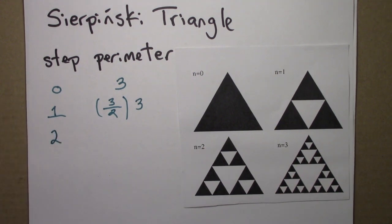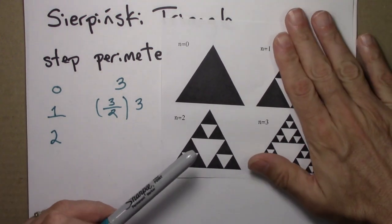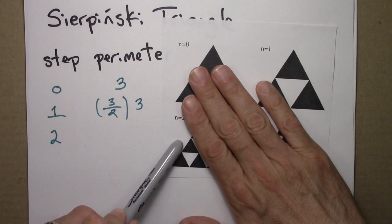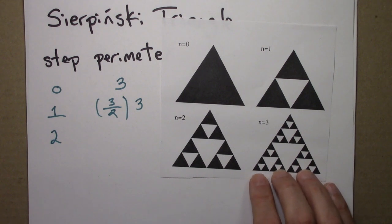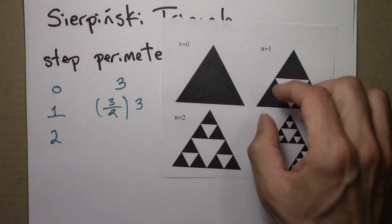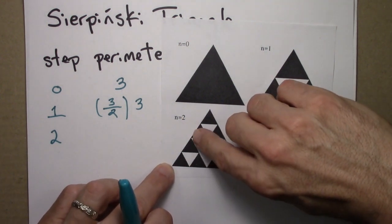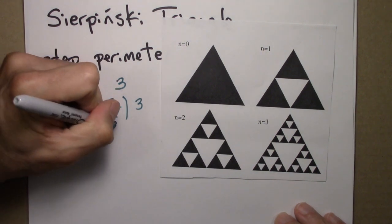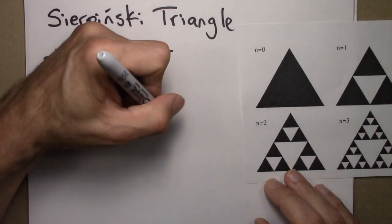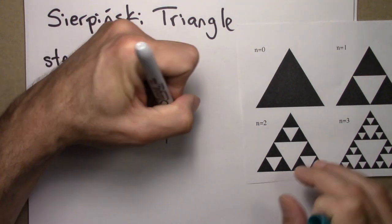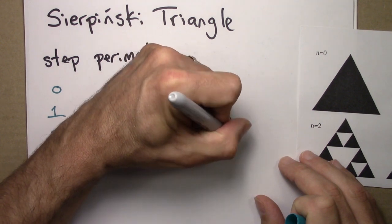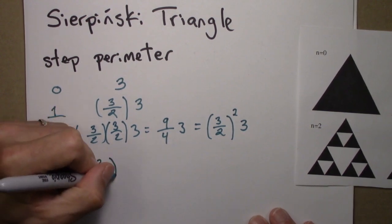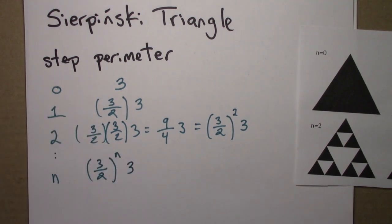At step 2, the story is similar. Each triangle, which has 3 sides, turns into one with 9 sides. So again, the number of sides goes up by a factor of 3, but each side itself is half as long. That means it's 3/2 of what we had before — so it's (3/2) times 3, or (3/2)^2 times 3. At step n, it's (3/2)^n times 3, our original perimeter.